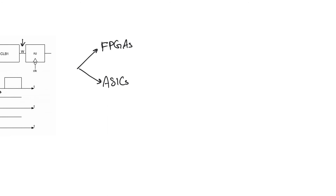ASICs, on the other hand, do not have the low-skew clock distribution networks that FPGAs have, and they do have specialized standard cells for implementing efficient latches. So we should ask: why not use latch pipelines in ASICs? The answer is you can sometimes use them, but carefully. The caveats are: you must keep the latch pipeline very short, be careful about timing, and almost certainly do the timing analysis for the latch pipeline manually.